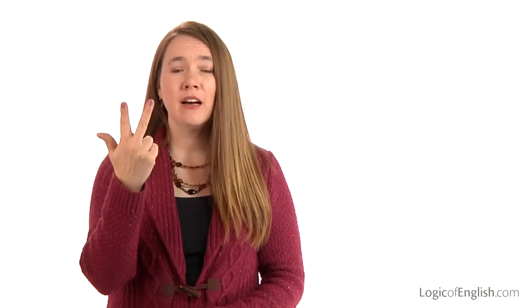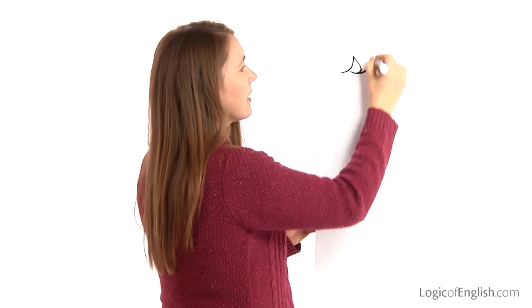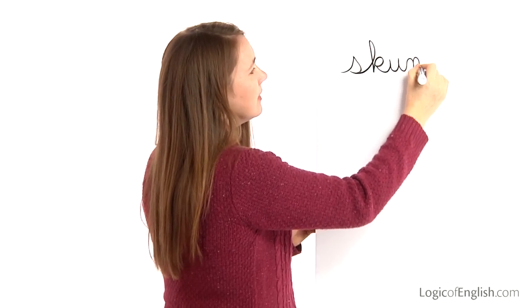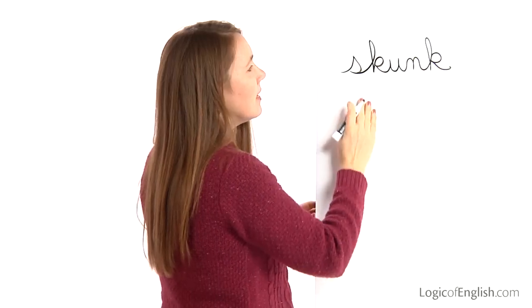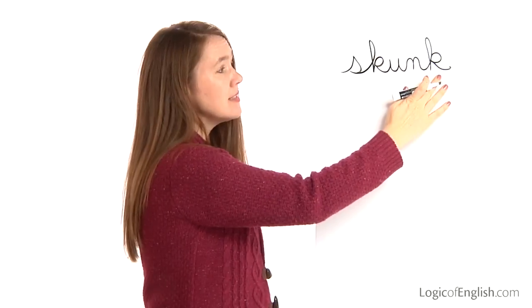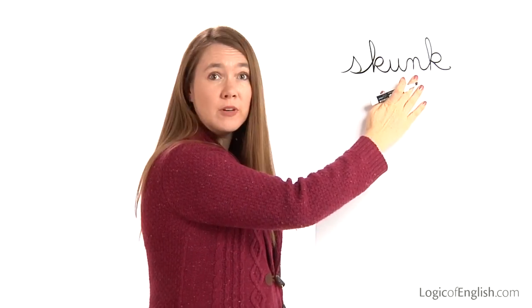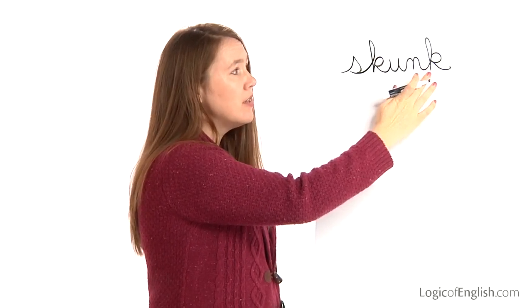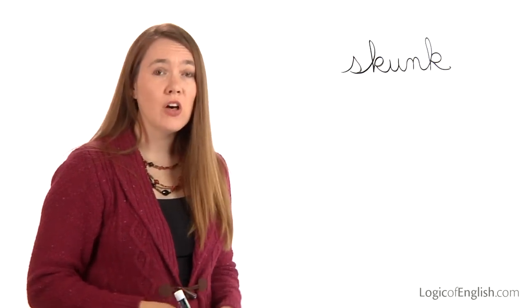The sixth word is skunk. The skunk smells. Let's sound it out together. Skunk: S, k — this will be a tall k — u, n, k — once again a tall k. Go ahead and write skunk. S, k, u, n, k. Now once again we couldn't use a two-letter k in skunk because the k is not after a single short vowel — it's before an n sound. So we had to use the tall k in this case.